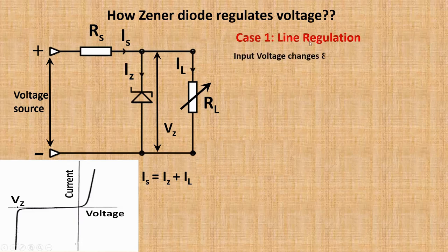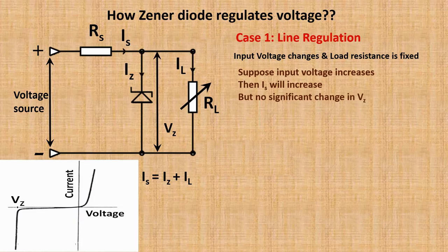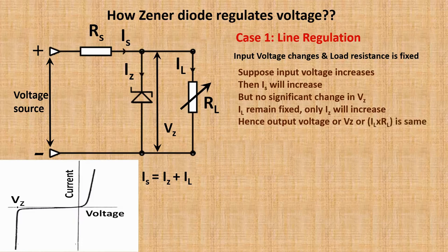Case one is line regulation: input voltage changes and load resistance is fixed. Suppose input voltage increases — the series current will also increase. The voltage increases but there is no significant change in V_Z. I_L will remain fixed and only I_Z will increase. Hence output voltage is fixed. The extra current will be taken up by the zener without any significant change in current across the load resistor, and the extra voltage will be dropped across series resistor R_S.